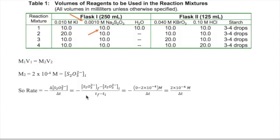If we then substitute these values into the rate equation, we will get that rate with respect to thiosulfate is 2 times 10 to the power of minus 4 molar over change in time. Note that the numerator here stays constant for all trials as we discussed above.